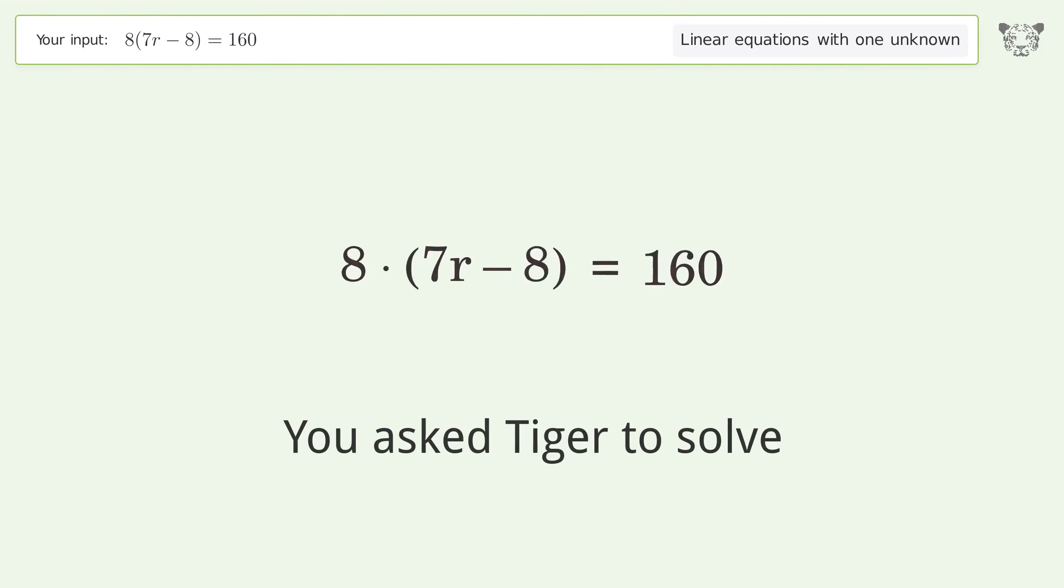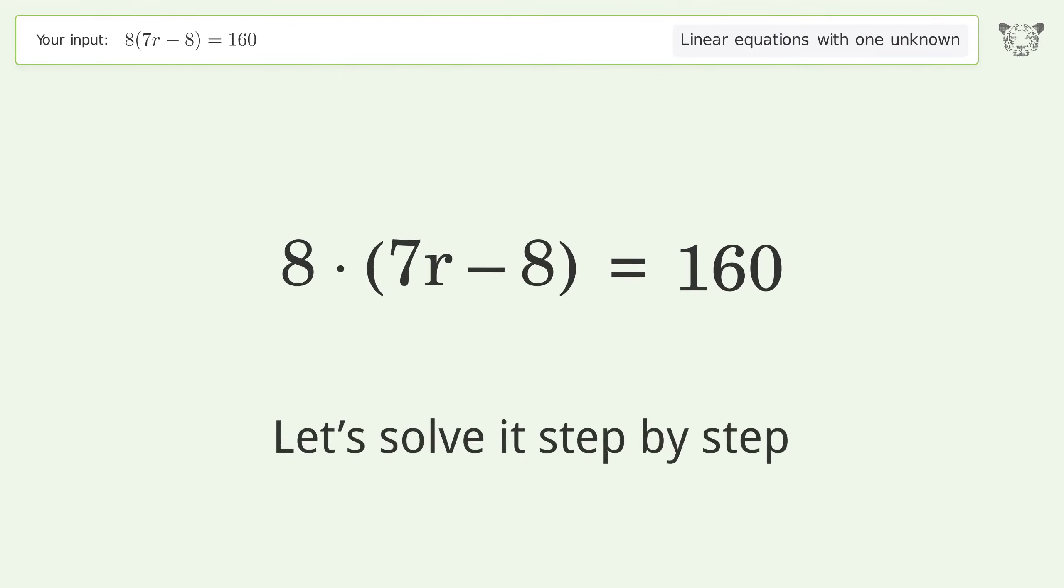You asked Tiger to solve this. This deals with linear equations with one unknown. The final result is r equals four. Let's solve it step by step.